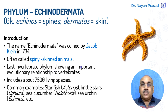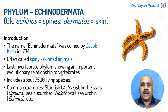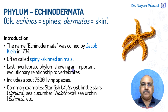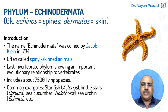Echinoderms are often called spiny-skinned animals and this is the last invertebrate phylum. It has several important evolutionary relationships to vertebrates — this group shows some characters of vertebrates, showing great affinity with vertebrates. This group includes about 7500 living species including several extinct species. Common examples are starfish,